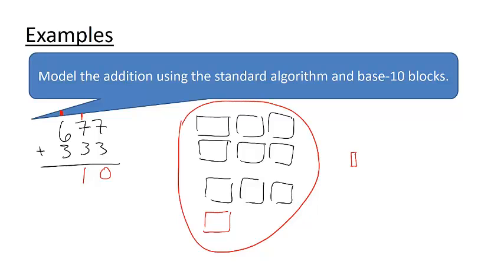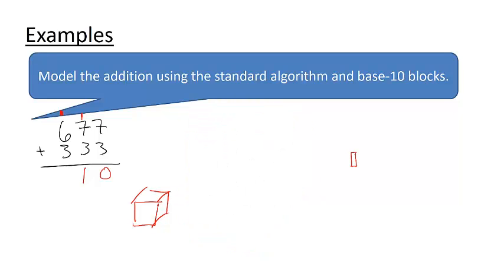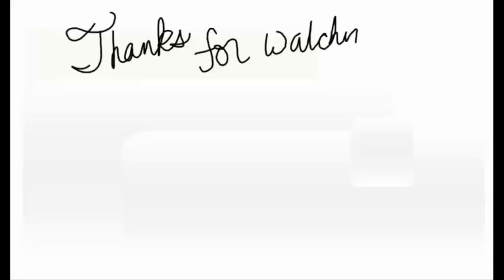Okay, finally notice that we have 10 hundreds blocks. So I need to regroup those into a brand new thousands block. Removing those 10 hundreds, I see that I have zero hundreds left over. So I'm going to put a 0 underneath the 3. And I'm going to carry a 1 over into the thousands column. There's nothing else to add that thousand to, so I'm just going to bring it down for a final answer of 1,010. Alright my little epsilons, stay positive.